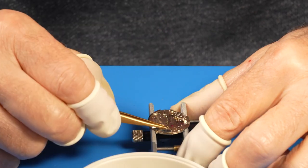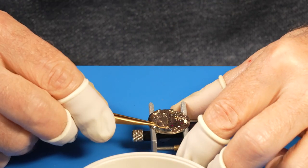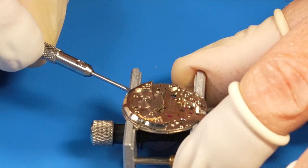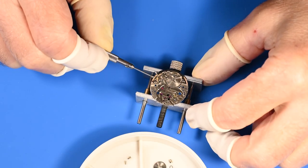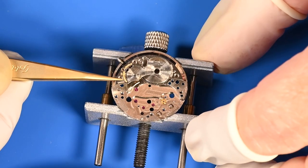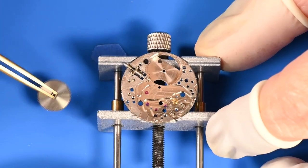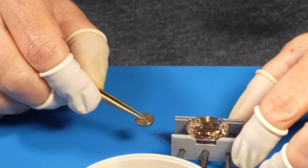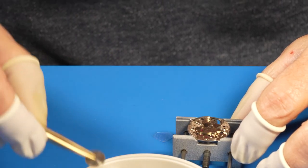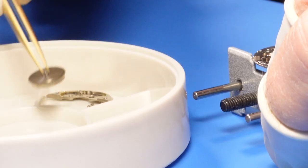To access the main spring barrel, we remove its bridge, which is held in place with three screws. With the barrel bridge removed, we can lift out the barrel complete, which is made of four parts. The barrel, the main spring, the barrel arbor, and lid. We'll open up the barrel and see these parts in a little while.